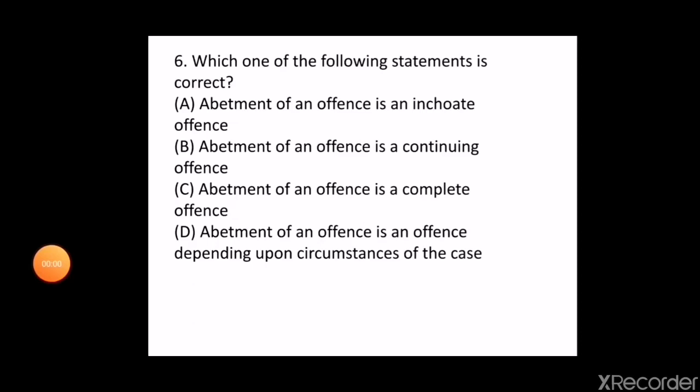The next question is: which one of the following statements is correct? A. Abatment of an offence is an inchoate offence, B. Abatment of an offence is a continuing offence, C. Abatment of an offence is a complete offence, D. Abatment of an offence is an offence depending upon circumstances of the case. The correct answer is A — abatment of an offence is an inchoate offence. This was asked in the UPPCJ in 2013 and also in Himachal Pradesh in 2011.